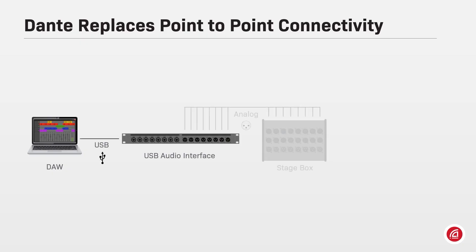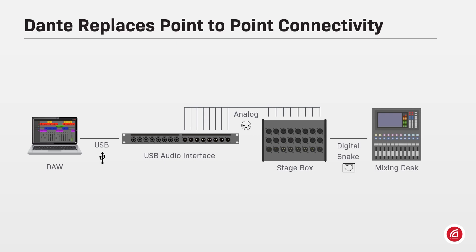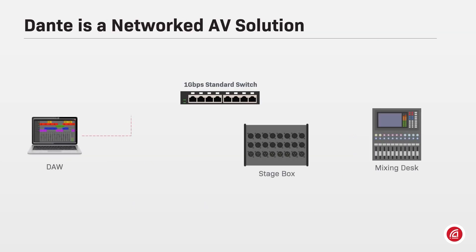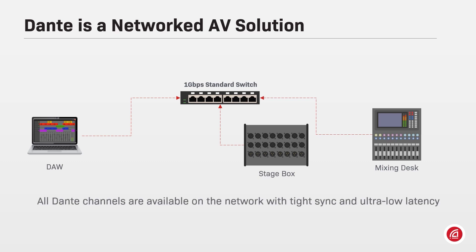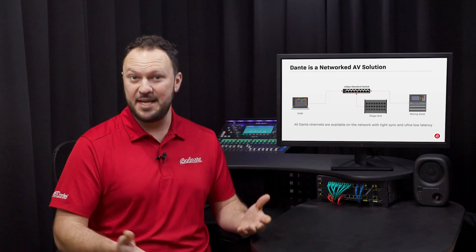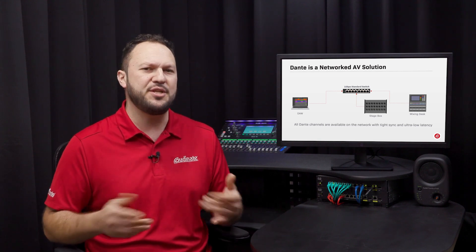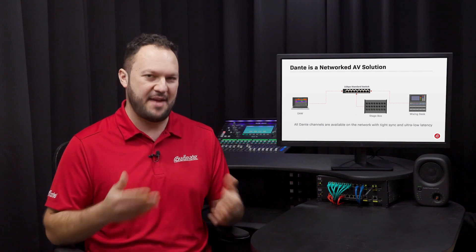Dante replaces point-to-point connectivity. Before Dante, digital AV systems used different types of connectivity between devices and computers, with unrelated connections to transport the same signal. Dante is a networked AV solution combining hardware and software to effortlessly stream hundreds of channels of uncompressed digital audio with perfect synchronism and ultra-low latency. The Dante implementation eliminates the need for breakout boxes, adapters, matrices, and dedicated cables for each separate type of media, and allows networked distribution, synchronization, control, and management of AV systems.